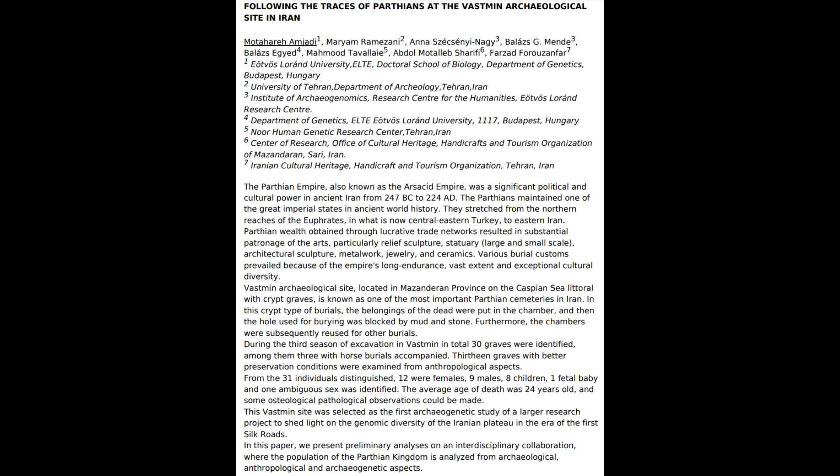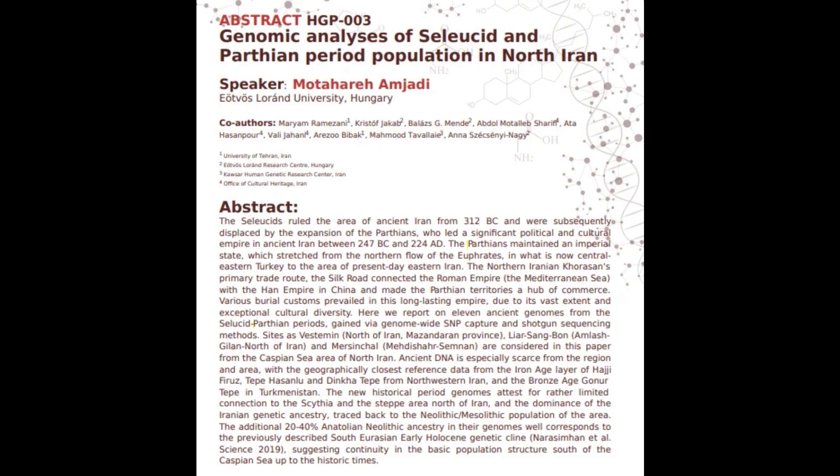I think this is one of the few shortcomings of this study. Here's an updated abstract — again you can take time and read it — and what's interesting is that it now says there are only 11 samples in total, which is rather unfortunate. Nonetheless, this is very crucial to understanding the genetic origins of these populations, particularly the indigenous populations of Iran during the Seleucid and Parthian periods.